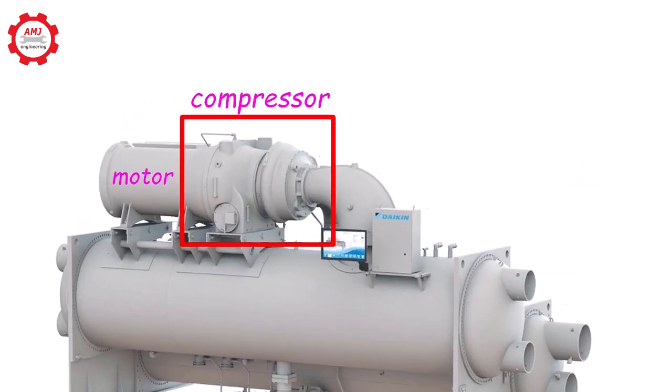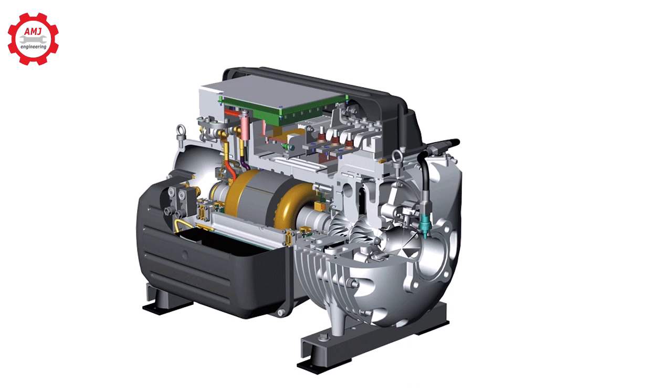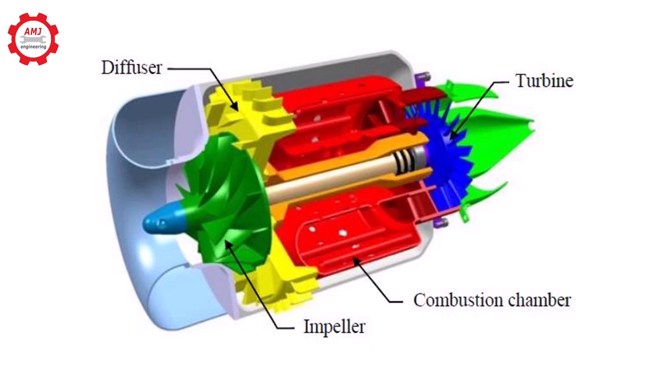Centrifugal compressors are usually driven with electric motors, but it is also possible to drive chillers directly with reciprocating engines, combustion turbines, or steam turbines.